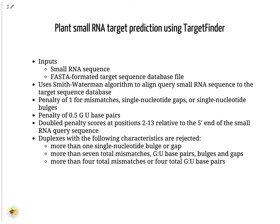TargetFinder takes a small RNA sequence and a FASTA-formatted file of the target sequence database. It uses the popular Smith-Waterman local alignment algorithm for aligning small RNA sequences to the target sequence database. A penalty of one is added for each mismatch, gap, and bulge, and 0.5 for non-canonical GU-base pairing. These penalties are doubled from positions two to thirteen. It allows at most one single-nucleotide bulge or gap in the duplex. If the sum of mismatches, GU-base pairs, bulges, and gaps of a duplex is more than seven, it is discarded. Duplexes with more than four total mismatches or four total GU-base pairs are also discarded.